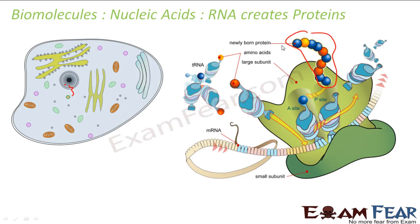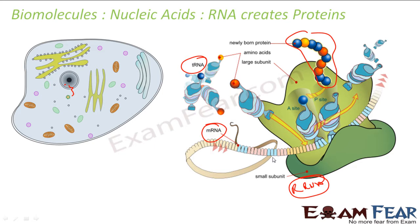These are newly born proteins. So there are three types of RNA: tRNA, mRNA, and rRNA — that last one is not shown here. tRNA is transfer RNA, mRNA is messenger RNA, and rRNA is ribosomal RNA. We'll discuss these later.